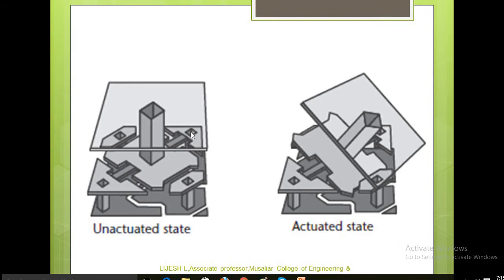This is the structure of a DMD. One is in the actuated state and another is in the unactuated state. In the unactuated state, the mirror is in the stable position with the hinge. In the actuated state, the mirror is tilted towards plus or minus 10 degrees when electrostatic forces are applied.